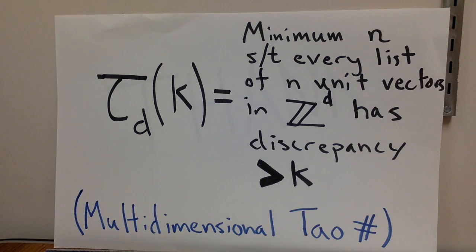Another thing that Tao proved is actually that you can use, instead of plus and minus one, you can use unit length vectors from pretty much any space you can think of. So one interesting multidimensional version of Tao numbers is tau sub d of k, which is the minimum n such that every list of n unit vectors in Z to the d has discrepancy strictly bigger than k. This is a much harder problem, but now we know it's finite, so we can investigate these numbers and think about it and see what sort of upper and lower bounds we can get.